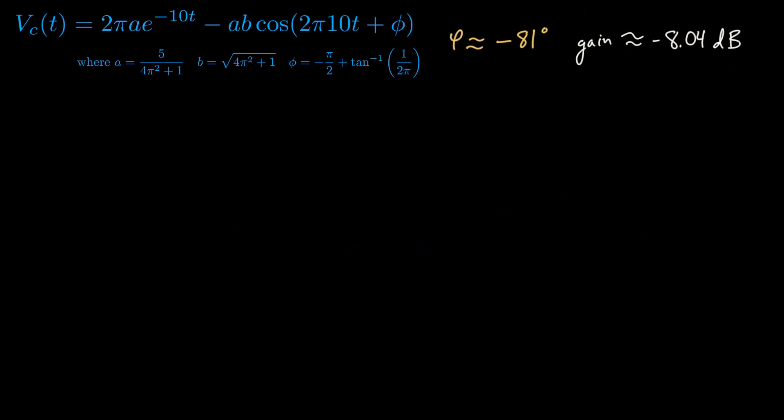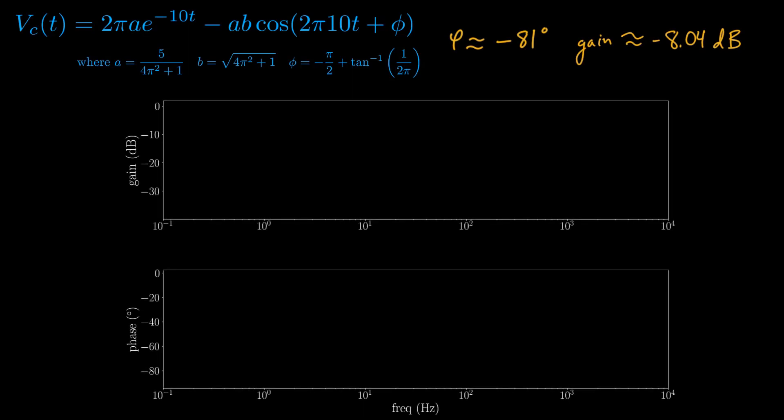The phase and gain of the long-term periodic behavior of this 10 Hz signal represent a single point in the Bode plot. We could fill in the rest of the Bode plot by varying the input frequency and computing the phase and gain from the ODE solution. But there's actually a much cleaner way to construct the Bode diagram analytically. Let me show you.